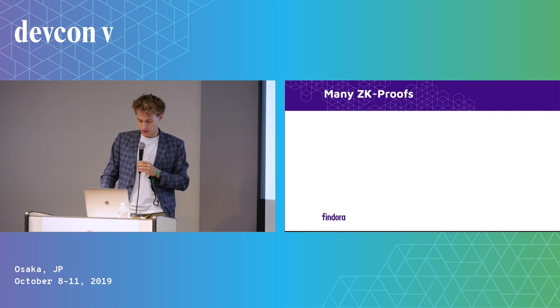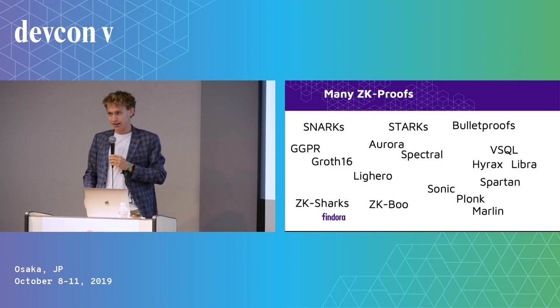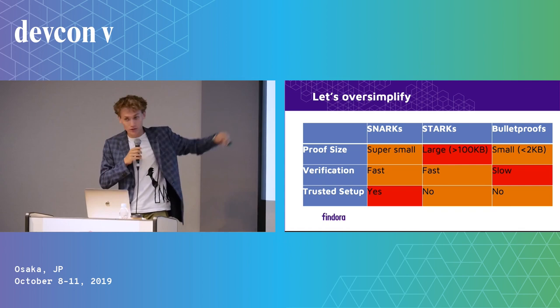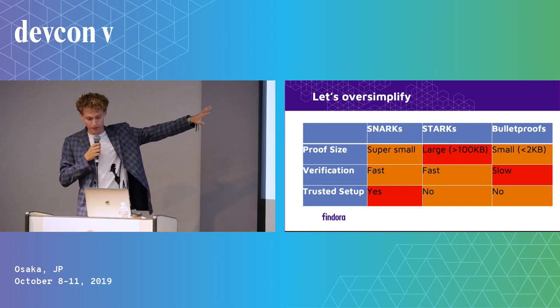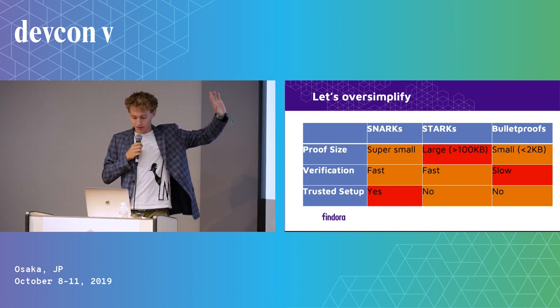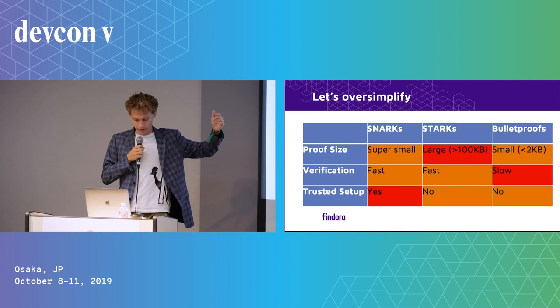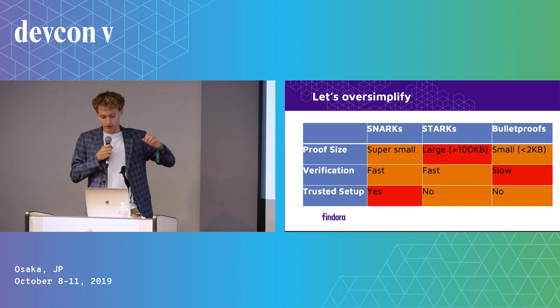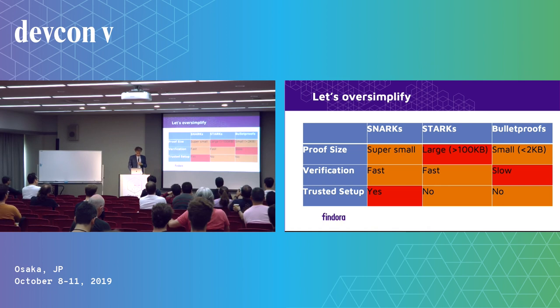There are many different kinds of zero-knowledge proofs — SNARKs, STARKs, Bulletproofs, and others — and there's tremendous development happening in this space. To vastly oversimplify: SNARKs and Bulletproofs are good on proof size while STARKs are not; verification is great for SNARKs and STARKs. SNARKs are great, but unfortunately they have this thing called the trusted setup, where someone needs to perform a trusted setup — basically a party who creates a proving key and a verification key — and if that party cheats, really bad things happen.